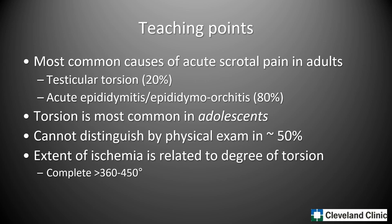The most common causes of acute scrotal pain in adults include testicular torsion in about 20% and acute epididymo-orchitis or epididymitis in 80%. Torsion is the most common cause in adolescents, and one cannot distinguish torsion from other abnormalities by physical exam in about 50% of patients. The extent of ischemia is directly related to the degree of torsion, with complete torsion comprising over 360 to 450 degrees of twist depending on the literature.